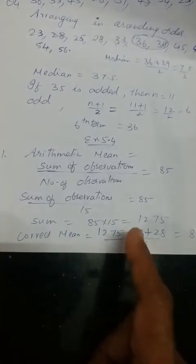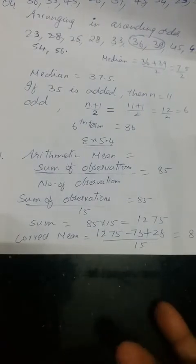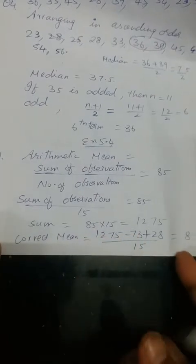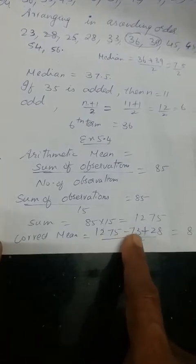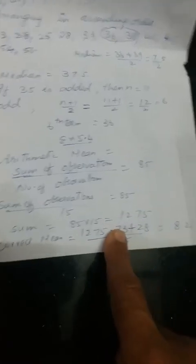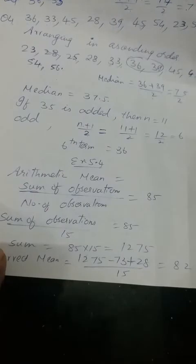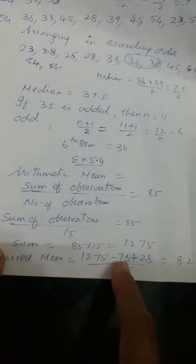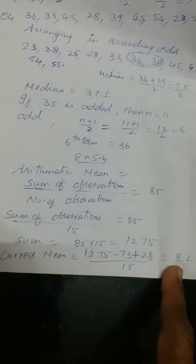Now the observation wrongly written — that number you subtract and the correct number you add. So: (1275 − 73 + 28) divided by 15. Add 28 and subtract 73, then divide by 15. You will get the answer 82. The correct mean is 82.